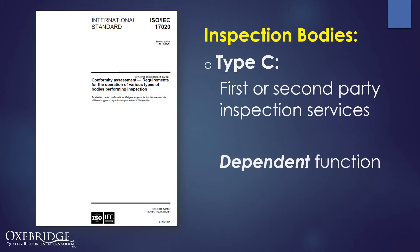Type C is similar — it's where the inspection body is a first- or second-party inspection service provider, but where the inspections are dependent. In other words, they might be doing inspection of products that they actually manufacture. It's the highest risk. Again, this would not apply to the CMMC scheme.